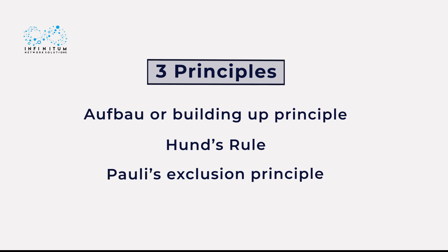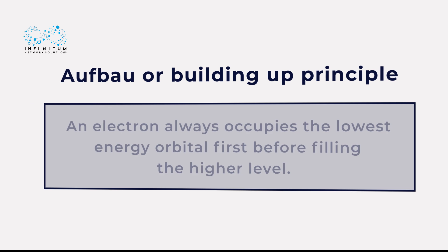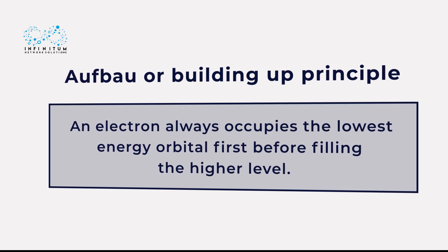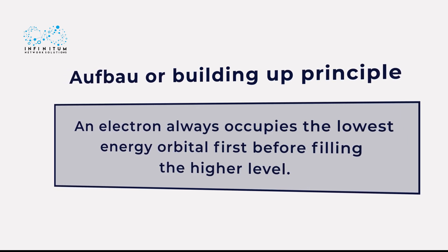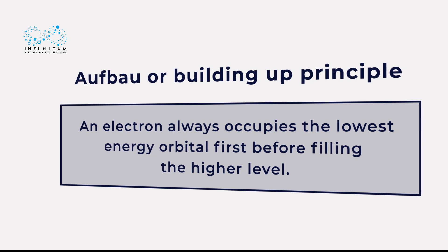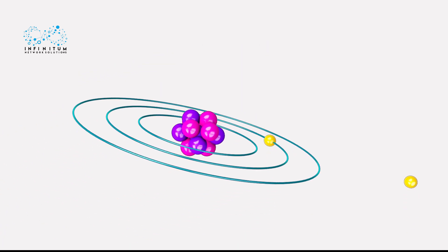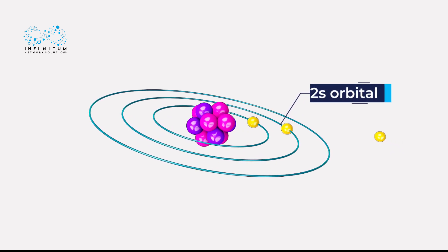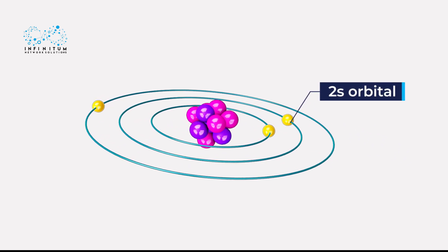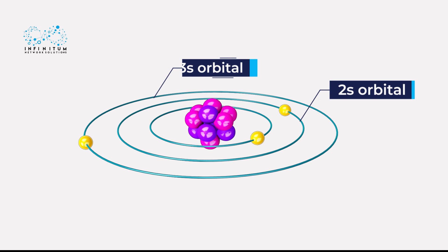Let's start with understanding the Aufbau Principle. According to this principle, an electron always occupies the lowest energy orbital first before filling the higher level. For example, an electron always occupies 2s, the lower energy orbital, first instead of the higher 3s orbital.